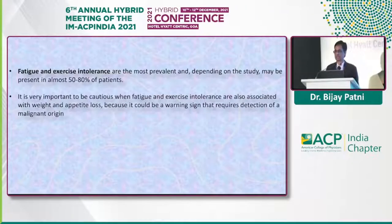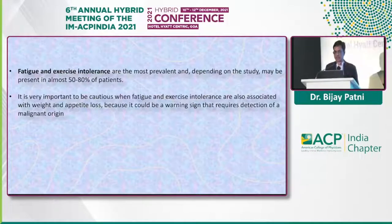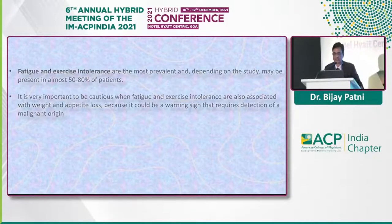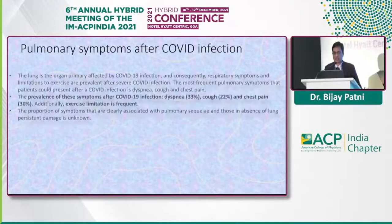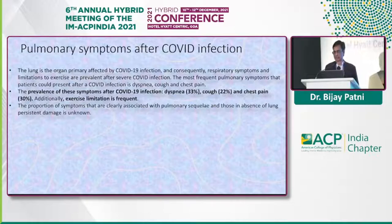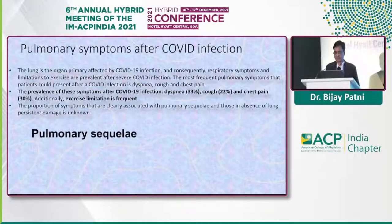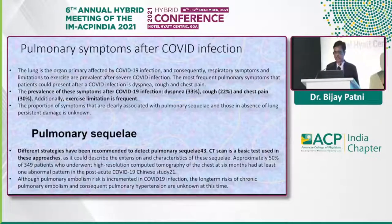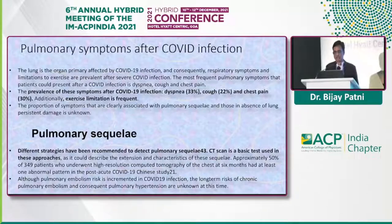Fatigue and exercise intolerance were the most prevalent post-COVID symptoms, seen in 50 to 80 percent of patients. Patients with this feature often feel they have not recovered because they remain very weak and cannot resume usual work. Pulmonary sequelae — dyspnea, cough, chest pain, exercise limitation — were diagnosed mainly by CT scan, showing reactive airway disease or restrictive disease. Pulmonary embolism was also commonly seen, leading to extended anticoagulation with NOACs for up to six months.